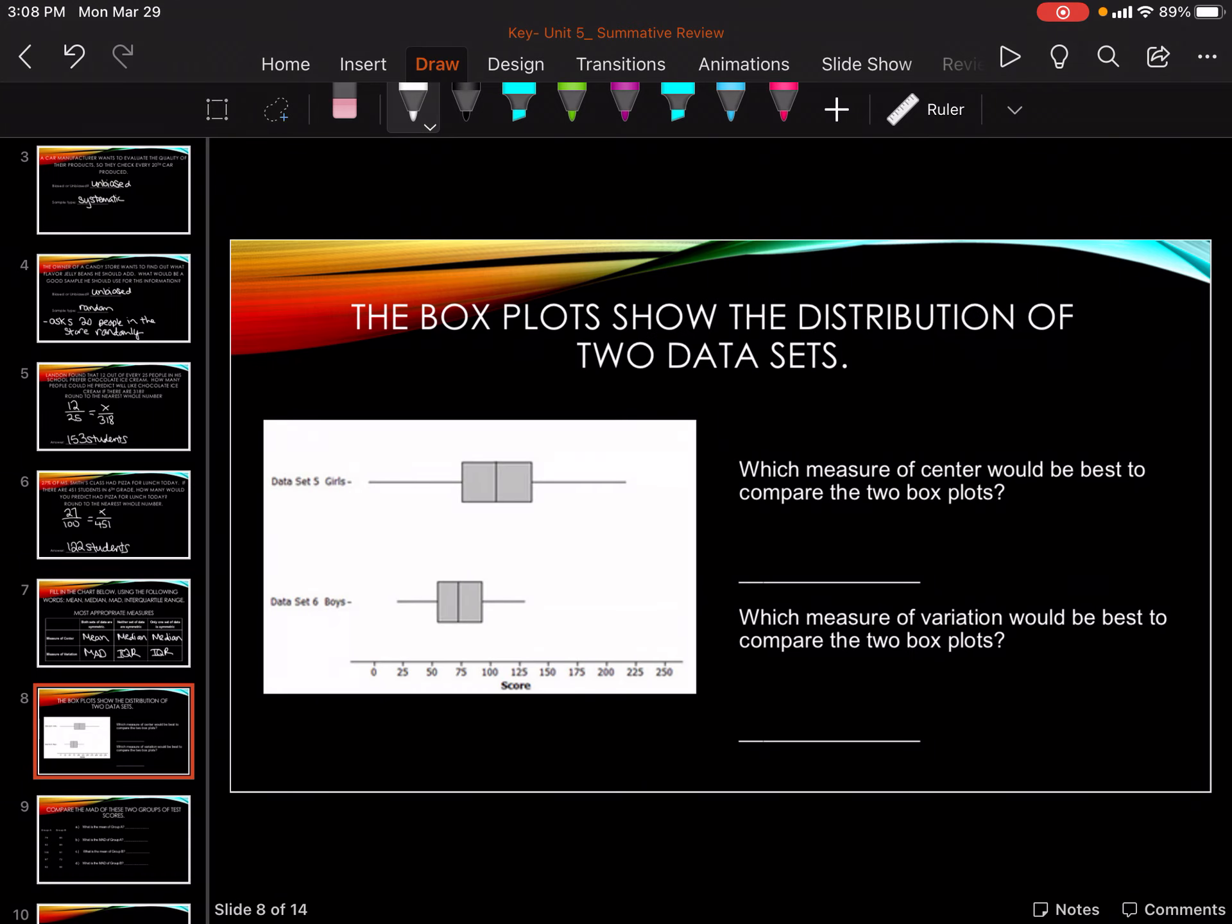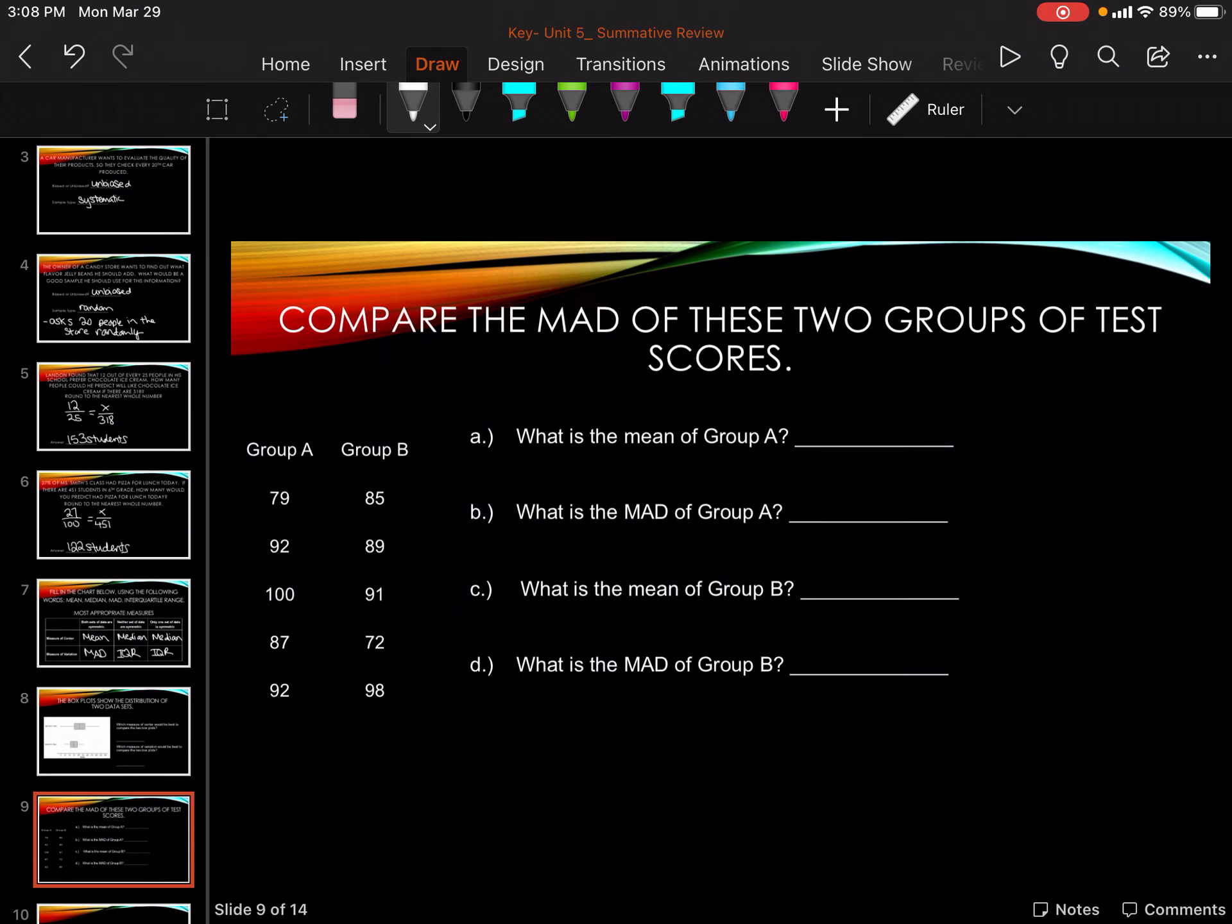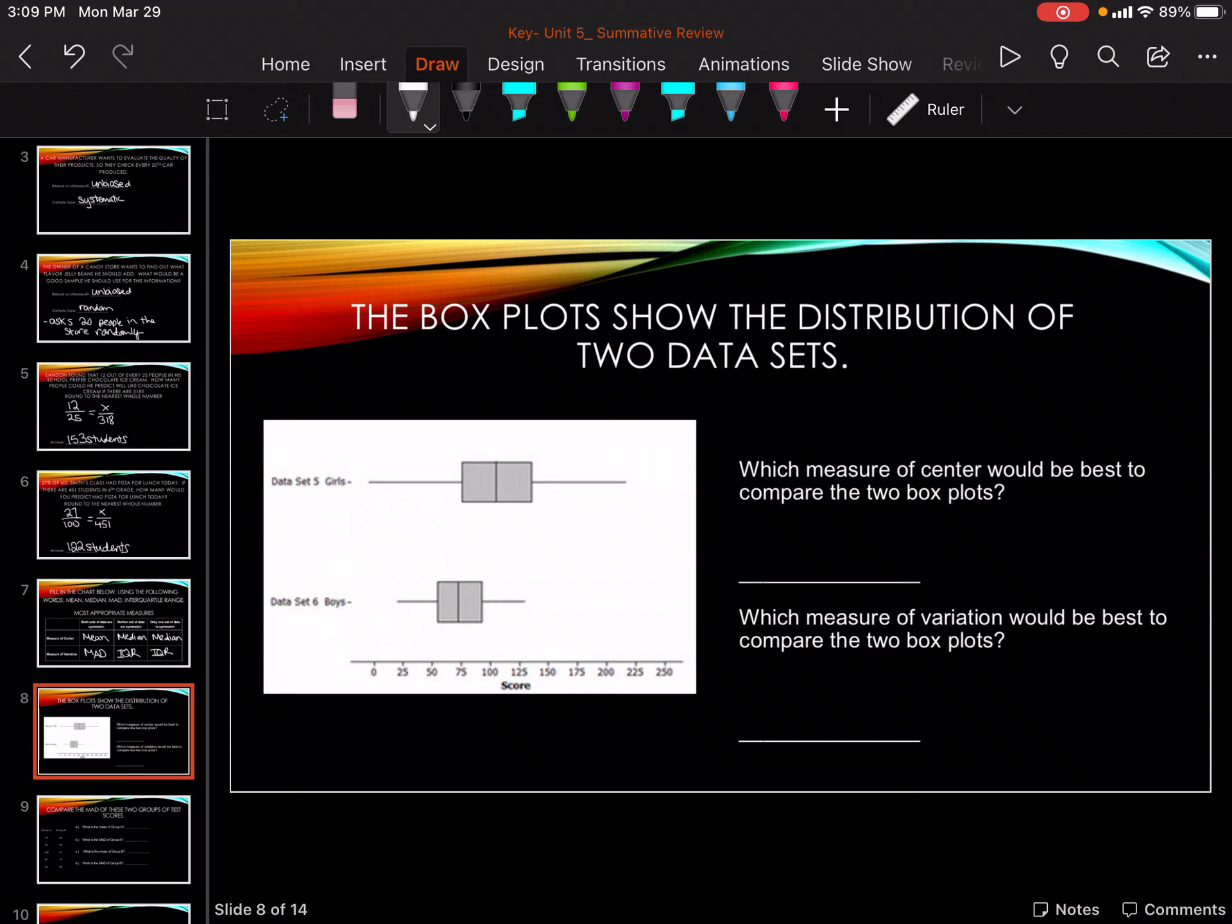So these are both symmetrical, okay, so we should use the mean and the MAD, but they're box plots. So we don't know the mean and the MAD, so we still need to use median and IQR.